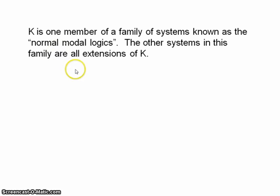K itself is one of a larger family of systems known as the normal modal logics. The normal modal logics include K and its extensions, and then there's another family known as the non-normal modal logics, which are in various ways weaker than K, but we'll come to that in due course. For now we'll be exploring the normal modal logics, and we can generate normal modal logics by making slight alterations to our system K.